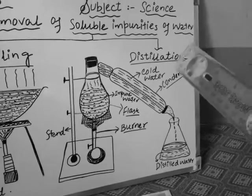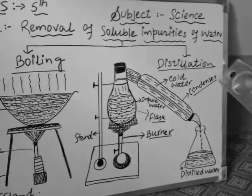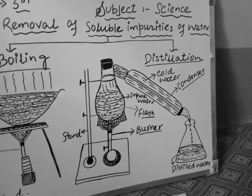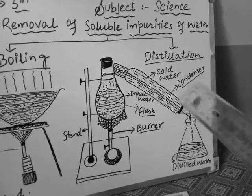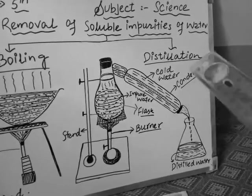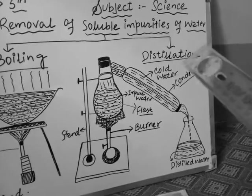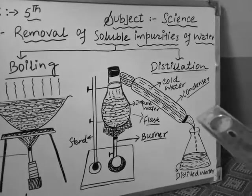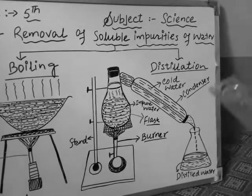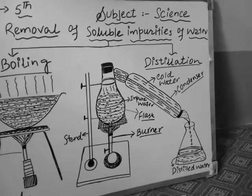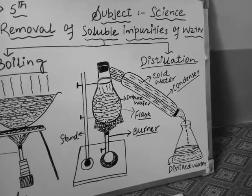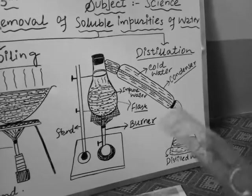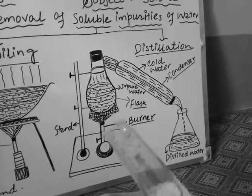We call this distilled water — it is the purest form of water on Earth, with essentially no impurity. Because distillation is very costly and time-consuming, we use distilled water mainly in medicines, ointments, or car batteries — not for general drinking or bathing purposes.